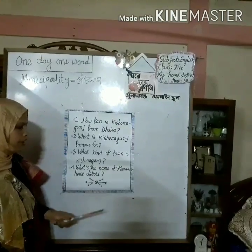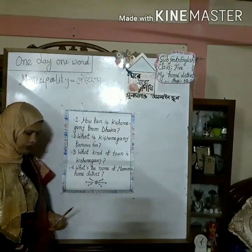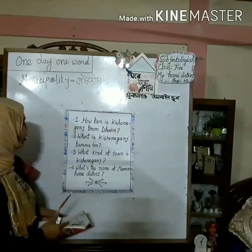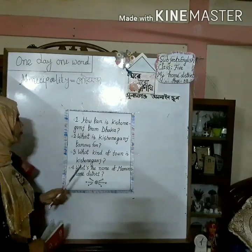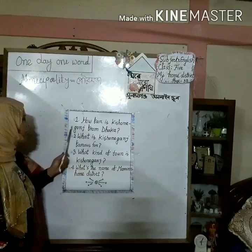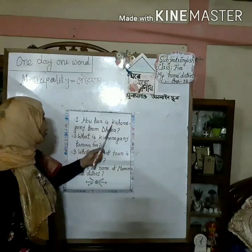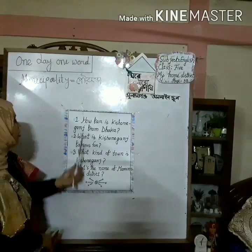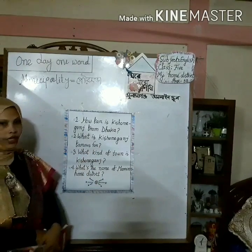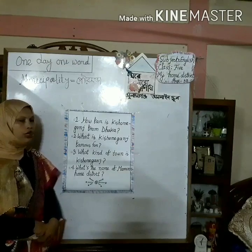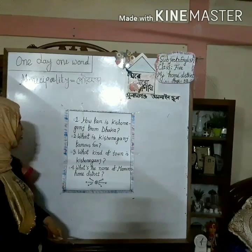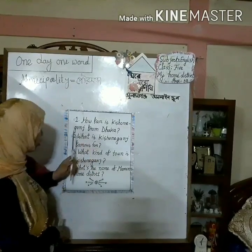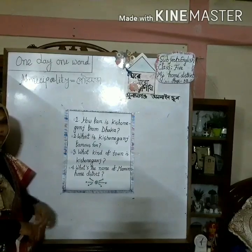My dear students, after that I find some questions related to the text. Everyone try to understand and listen to me attentively. My first question is: How far is Kishoreganj from Dhaka? It is 145 kilometers from Dhaka.